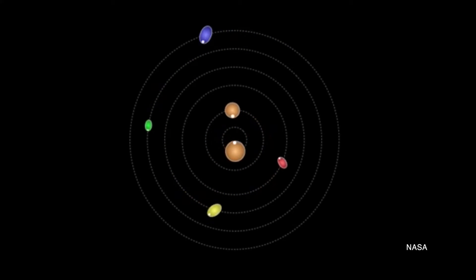Instead, they are spinning incredibly fast. Hydra, for example, the most distant of the four, spins 89 times for every orbit it makes around Pluto.